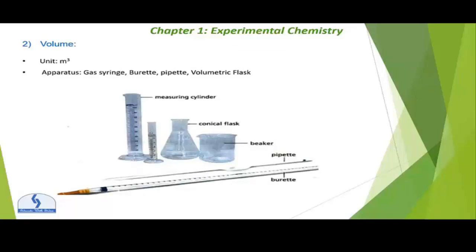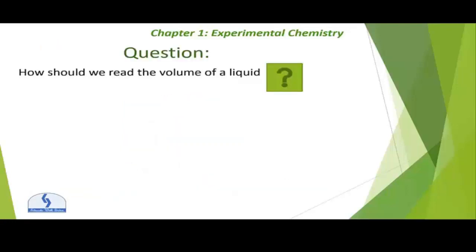Here is a figure showing the apparatus: this is a large measuring cylinder, this is a small measuring cylinder, this is a conical flask, this is a beaker, and this one is a pipette. Next is temperature.